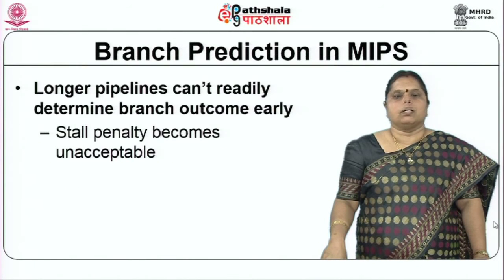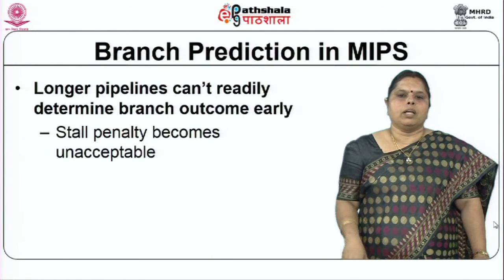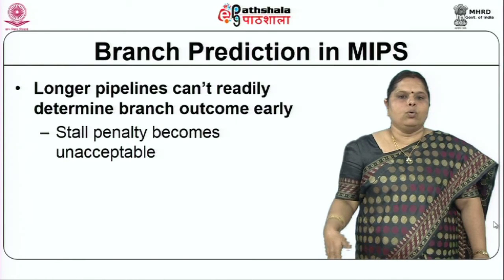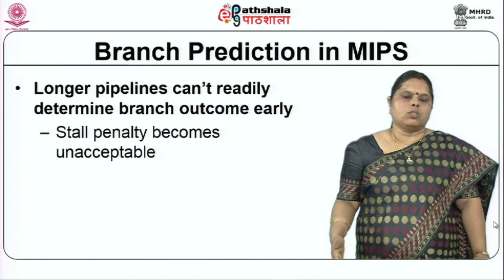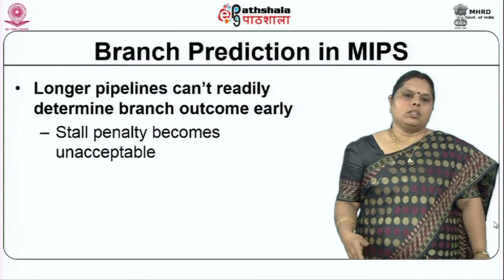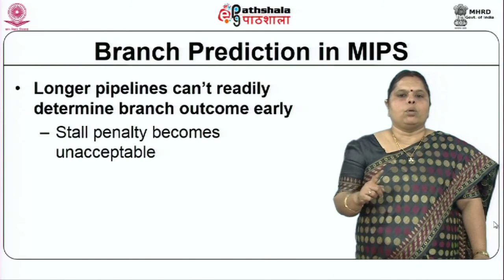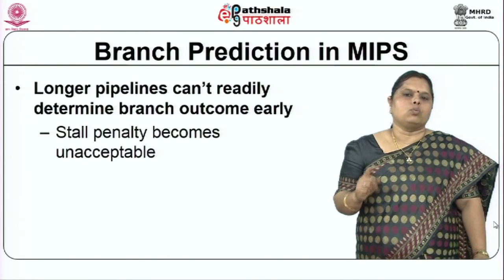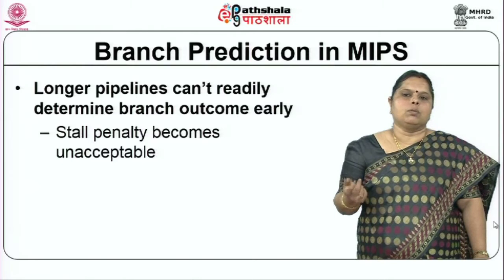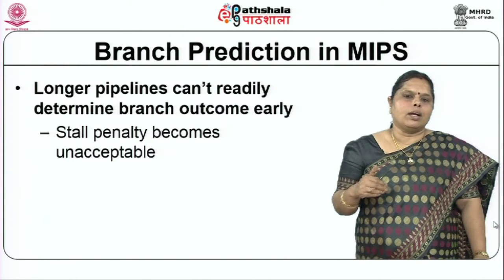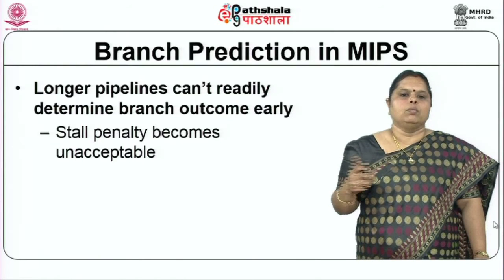In MIPS branch prediction, with a short five-stage pipeline, you have the option of resolving the branch — finding out the condition as well as evaluating the branch target address — in the second clock cycle itself. This means you pay only one clock cycle penalty. This is a more aggressive implementation, but you cannot afford to do this in a longer pipeline, where you cannot readily determine the branch outcome early and the stall penalty becomes very high.